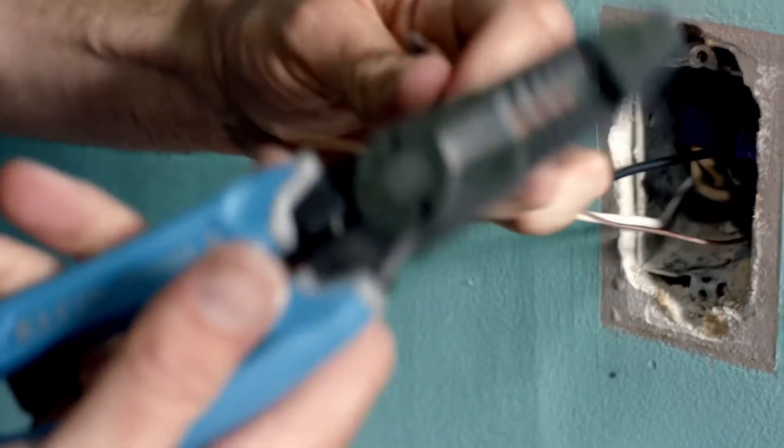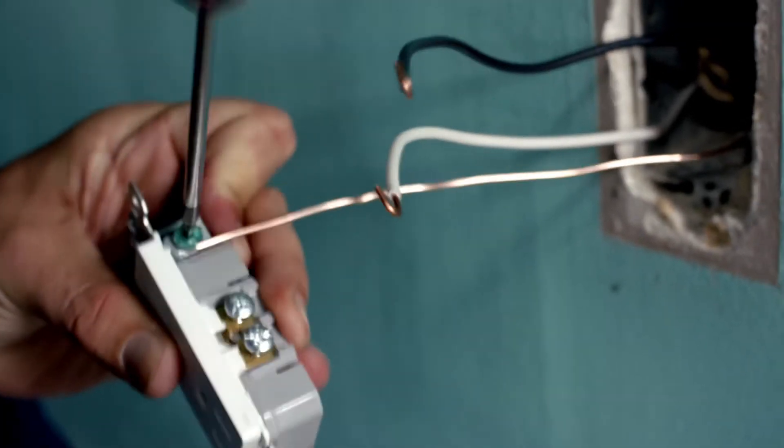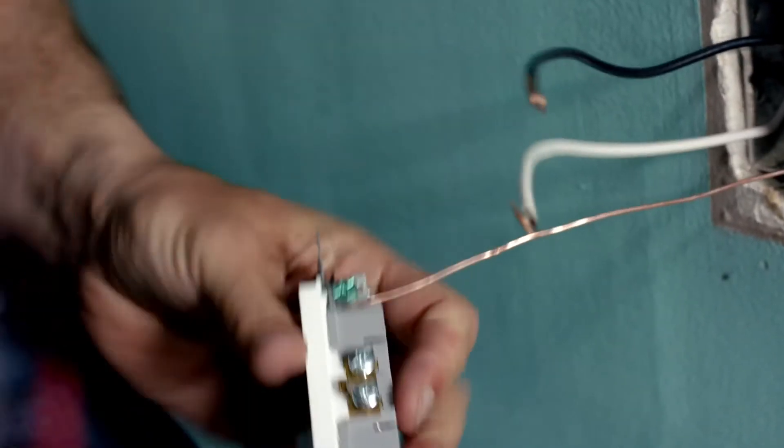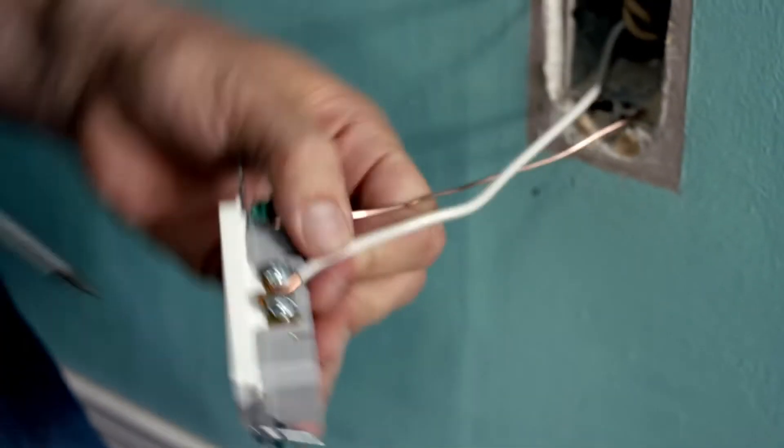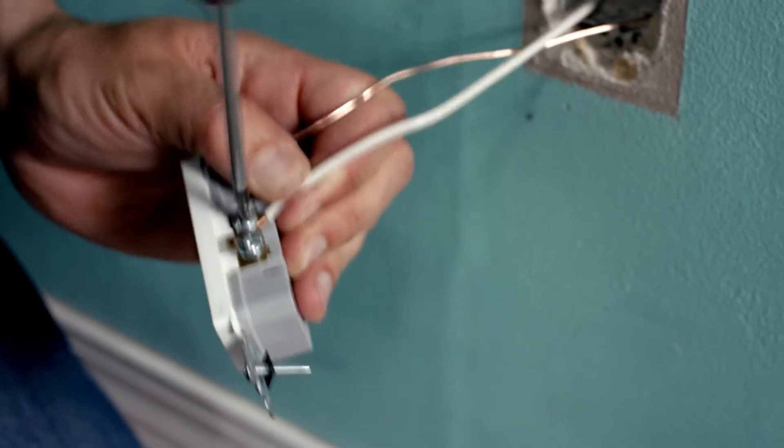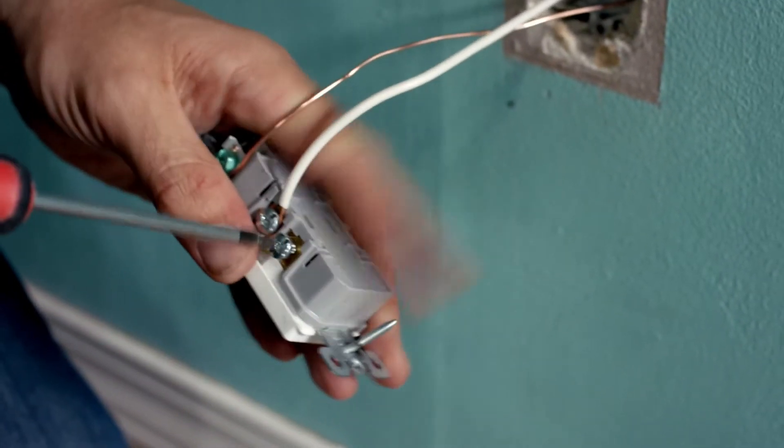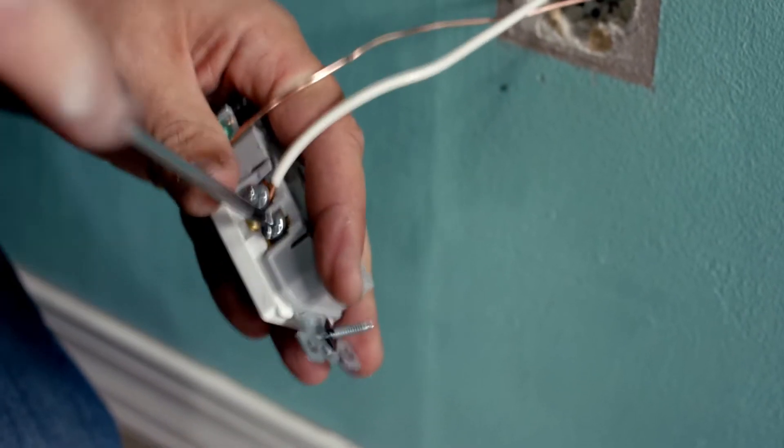We're just attaching our plug. Green is your ground, or your bond depending on how picky you want to be with your vocabulary. The silver screw is going to be your neutral. Make sure that every time we have a screw that's not being used, we tighten it down so that it can't catch on the box. Black goes to gold.